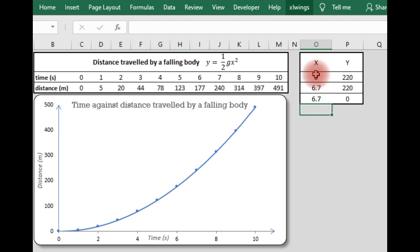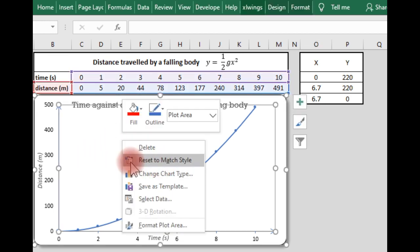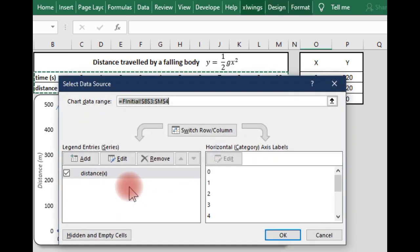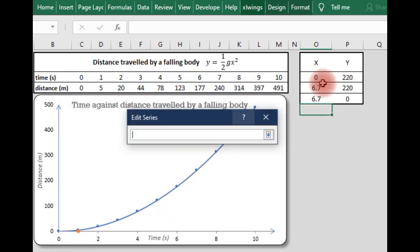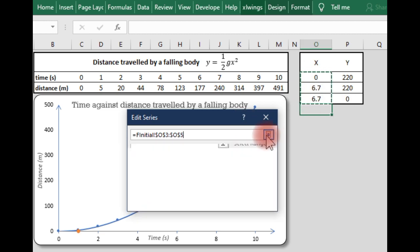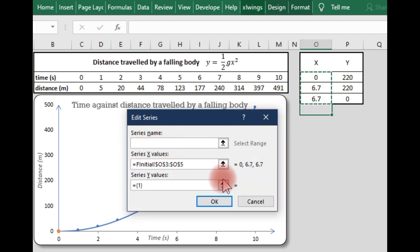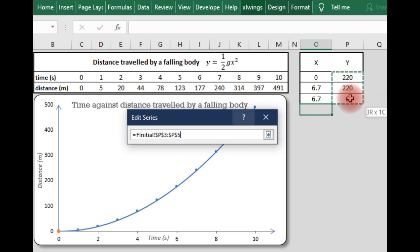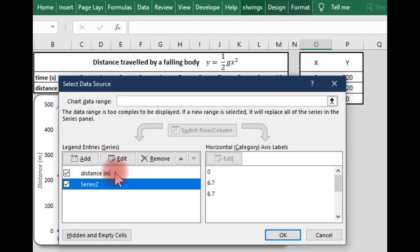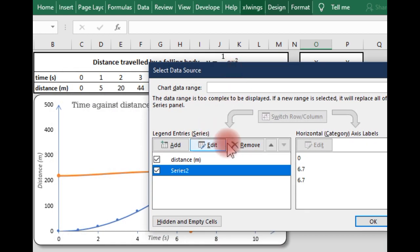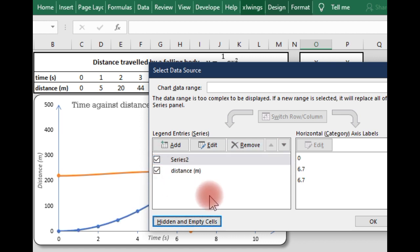Now that we've done this, we are going to add it to our graph as another line. To do that, we select data and then we say add. So we are adding another series. These are x values for the series name, you can leave it blank, and then these are our y values. Once you do that, it appears but it looks curved and we don't want it to be curved, we want it to be straight.